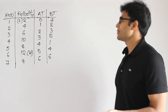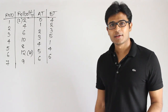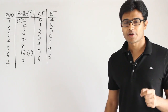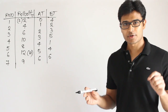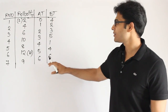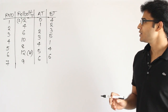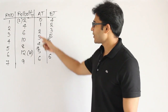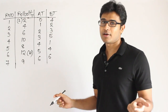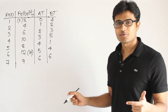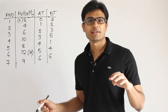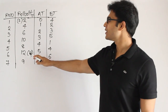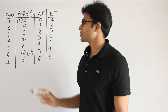Now let's see the non-preemptive version of priority scheduling. Once we take a process with the highest priority, we are going to run it till completion without any preemption. One important thing: whenever priorities are given, you should always know which number means high priority. Sometimes people take the low number as high priority and high number as low priority. Here they have clearly mentioned that 12 is the highest priority and 2 is the lowest priority.